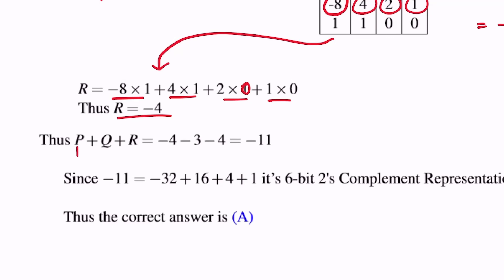So we now have P, Q and R as minus 4, minus 3, and minus 4. So now we add all the 3 and we get minus 11.